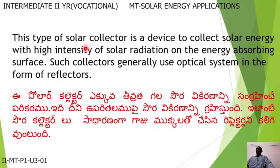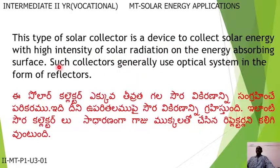This type of solar collector is a device to collect solar energy with high intensity of solar radiation on the energy-absorbing surface. Such collectors generally use an optical system in the form of reflectors.